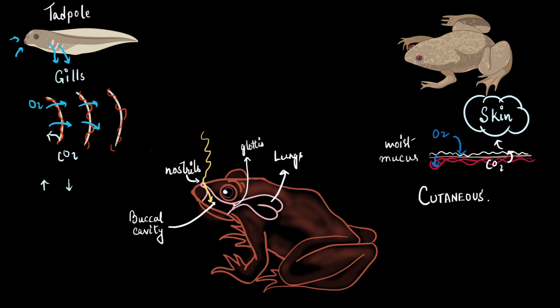And this kind of respiration is called buccopharyngeal respiration. Interesting, right? Now, let's move on to the fourth way of respiration of frogs, that is through their lungs. Let's see how they do that.